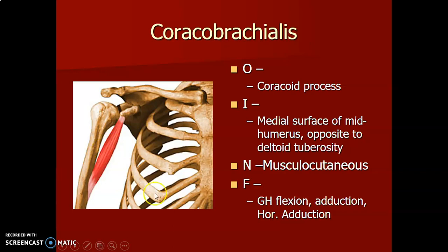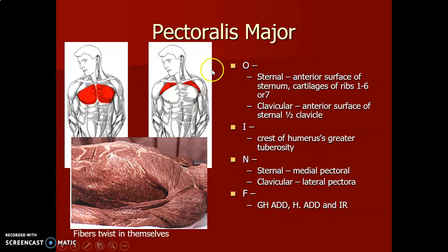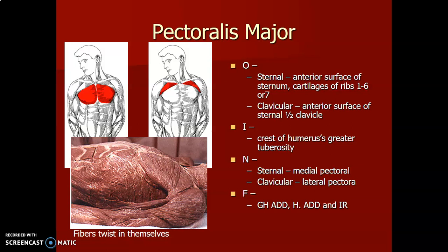Pectoralis major has two origins: a sternal origin from the anterior surface of the sternum and cartilages of ribs 1 to 6 or 7, and a clavicular portion from the anterior surface of the clavicle. It inserts on the lateral lip of the bicipital groove. The sternal head is innervated by the medial pectoral nerve, while the clavicular head is innervated by the lateral pectoral nerve. It causes adduction and internal rotation of the glenohumeral joint.